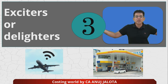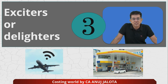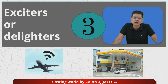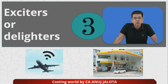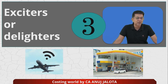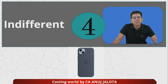The third part is exciters or delighters. If these things are present, you get abnormal gains. Examples: Wi-Fi on a flight, a car wash facility at petrol stations, and Wi-Fi on trains that the government has now started providing. These create excitement beyond what the customer expected.